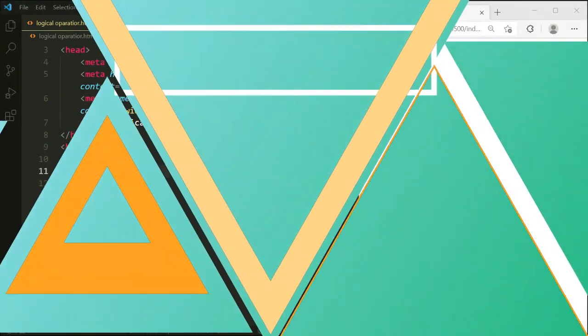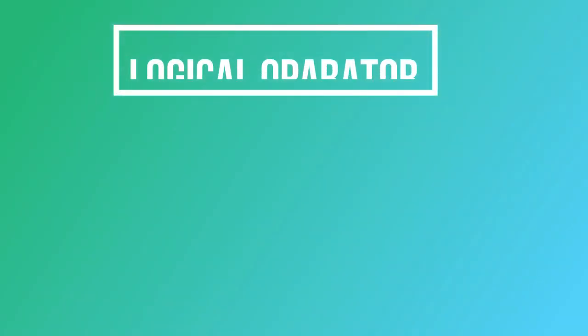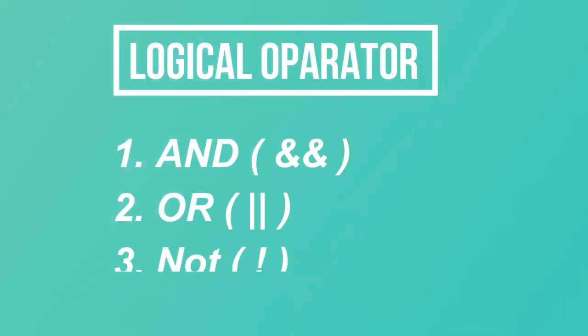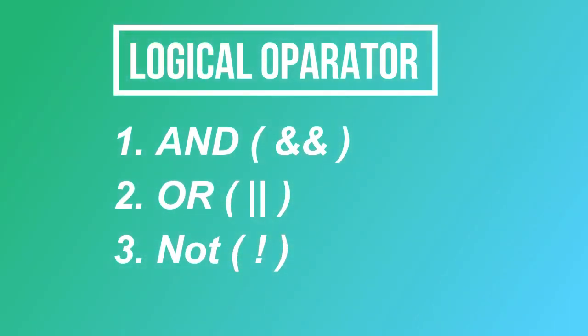In the intermediate ICT subject, we know that the logical operator is basically three types. The first one is AND, OR, and NOT. We will use these three types of operators in this tutorial and learn how we can apply them and how they actually work.